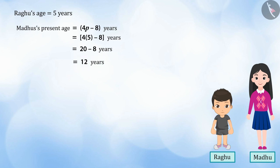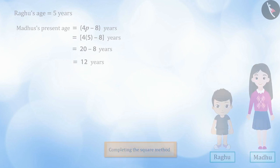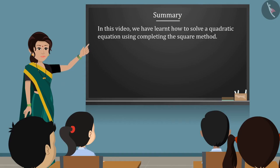The method which we have used to find the age of Raghu and Madhu is called completing the square method. In this video, we have learnt how to solve a quadratic equation using completing the square method. In the next video, we shall see the common mistakes that are made while solving such equations.